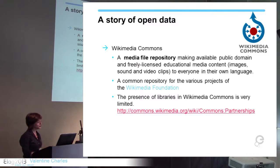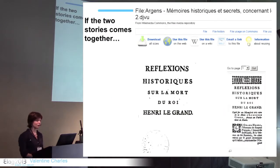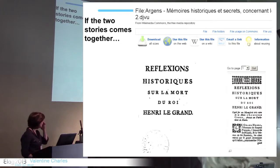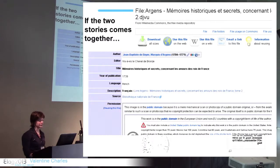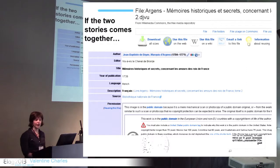So what could be interesting is to put these two stories together. What if libraries would redistribute their digital content through Wikimedia Commons? For example, here you have a text from the National Library of France which has been put into Wikimedia Commons — you have the media object, some metadata accompanying it, and information about the license. This would be a way to engage library content into different channels such as Wikimedia Commons.